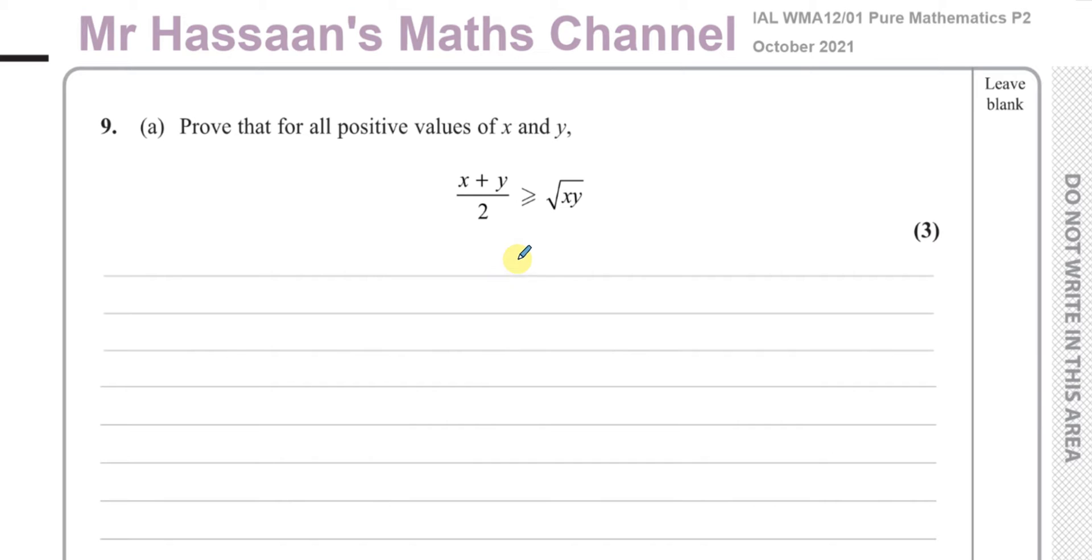This question here is about proofs. It says prove that for all positive values of x and y, x plus y over 2 is greater than or equal to the square root of xy. Alright, so for this question there's a few different methods we could use.